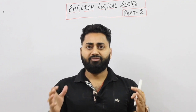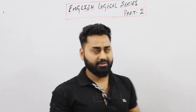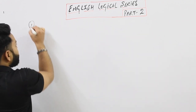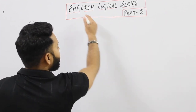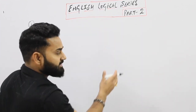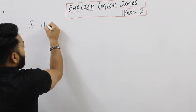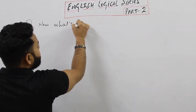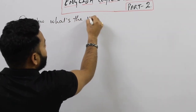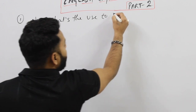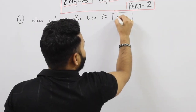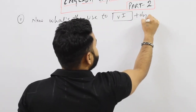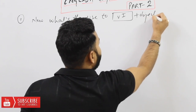Let's start with today's first logical. Our first logical in Part 2 of the English Logical series is 'What's the use to.' After 'What's the use to,' you have to use only the verb first, then your object.